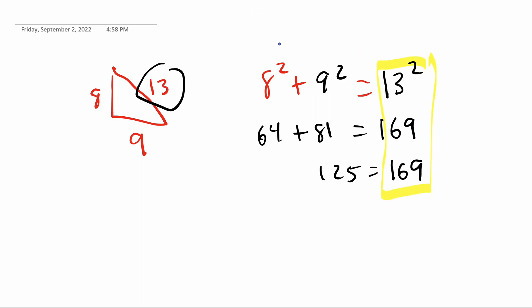If c squared is bigger, it's obtuse. And if c squared is smaller, it would have been acute. And if both sides are equal, it is right. So hopefully that helps you understand the idea.